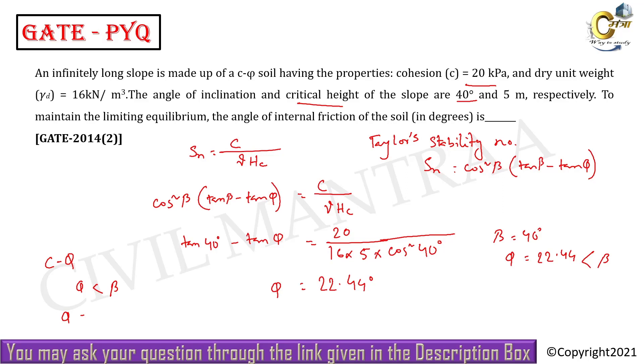This everyone knows, but if you know the full form of Sn - Taylor stability number - from there you can easily calculate the φ value. Thank you students for watching.